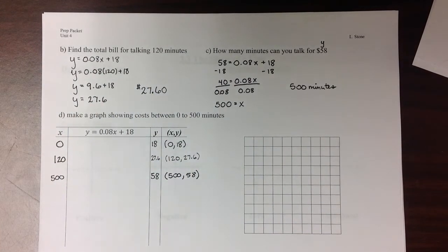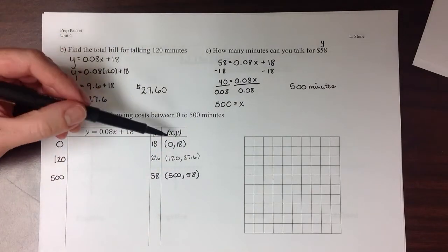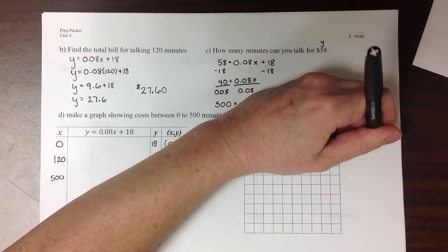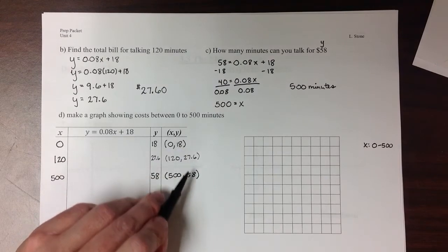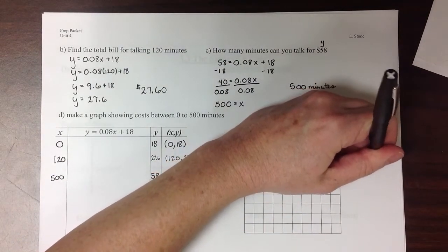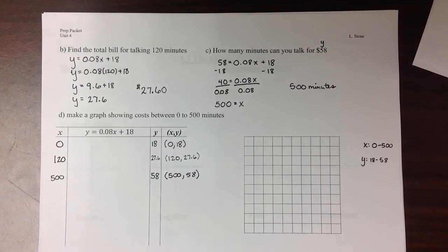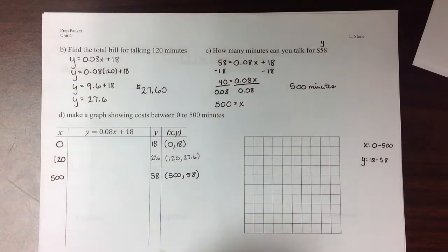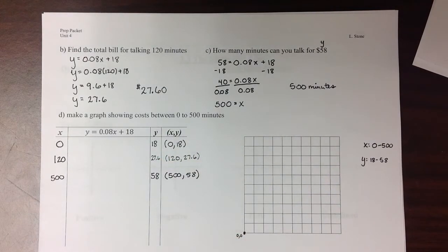The next thing that we need to talk about is the graphing. So if you look here, we want to consider what is the span of the values of x and y that we're going to need to graph. Well, it looks like our smallest x value is between 0 going up to 500. And our y values start at 18 and go up to 58. Because there are no negative values that I need to graph, which makes sense, since you can't talk a negative number of minutes or pay a negative number of dollars for your phone bill, we're actually going to let our point of origin, that (0, 0), be right down here at the corner.